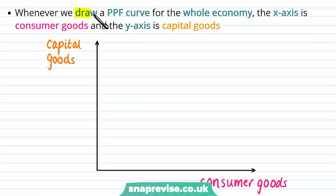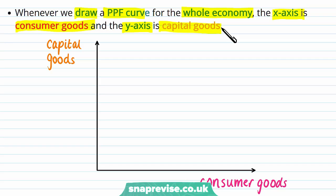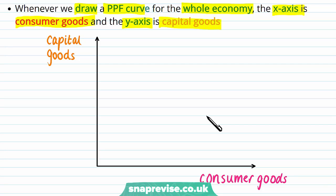When we draw a PPF curve for the whole economy — not looking at individual goods but the economy as a whole — on the x-axis we have consumer goods and on the y-axis we have capital goods. Capital and consumer goods are substitutes of sorts: capital goods give you more consumer goods in the future, while consumer goods give you some output now. We'll see further how they are substitutes using our PPF curves.